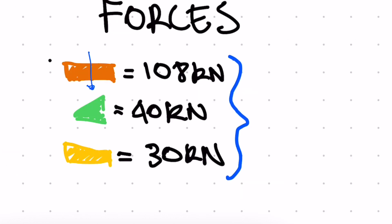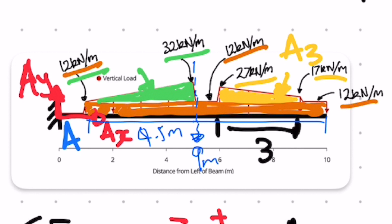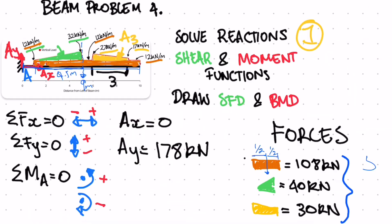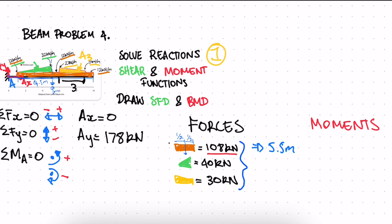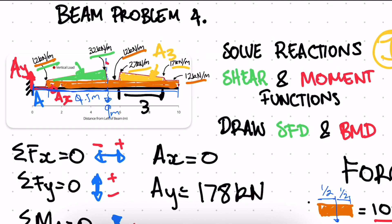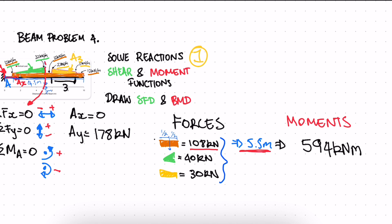For the rectangular load of 108 kN, the resultant acts at the midpoint, so halfway along 9 m is 4.5 m. Adding the 1 m offset to point A, the total distance from A is 5.5 m. The moment from the rectangular load is 108 × 5.5 = 594 kN·m, acting clockwise about A.